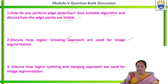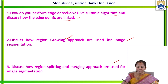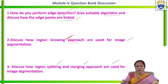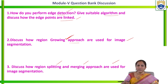The next question is: discuss how the region splitting and merging approach is used for image segmentation. To clearly understand this, we consider one example and determine in what conditions the region should be split and in what conditions it should be merged. For the example, we also draw the quad tree representation. You can refer to the playlist.